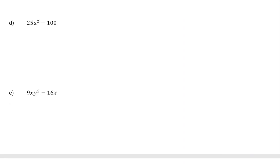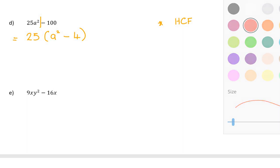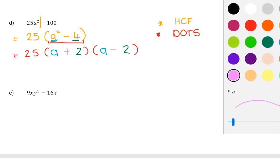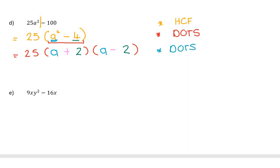Question d: 25a² minus 100. First check for highest common factor — 25 goes into both terms, giving 25(a² minus 4). Now check for DOTS inside the bracket: two terms, a difference, both perfect squares. Factorizing: a times a gives a², two times two gives four. Signs: one plus, one minus. Checking for another DOTS: the plus bracket is finished; the minus bracket has neither term as a perfect square — so we're done.